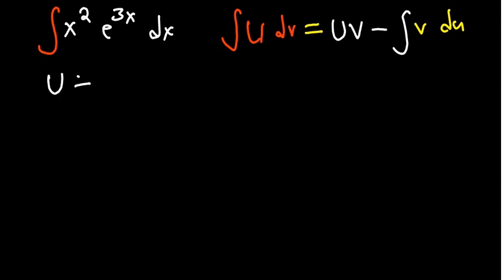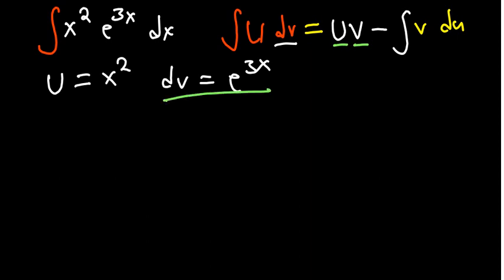Therefore our u is x squared and dv is e to the power 3x. From the formula we need u, v, du, and dv. We have u; now we need v, which we get by integrating dv.